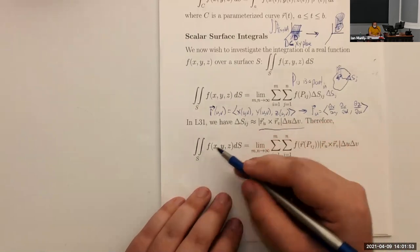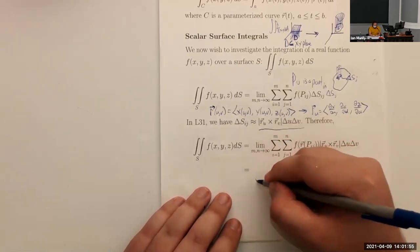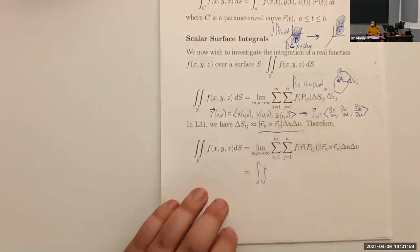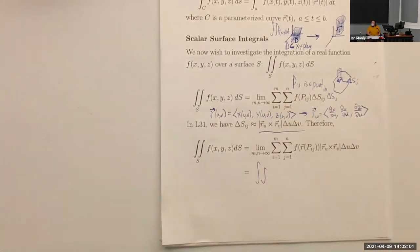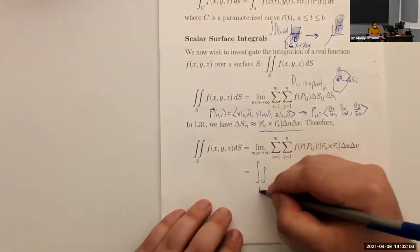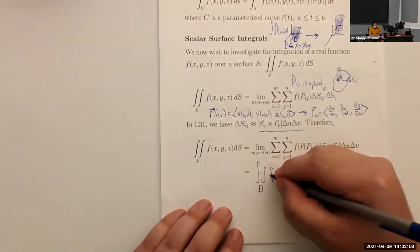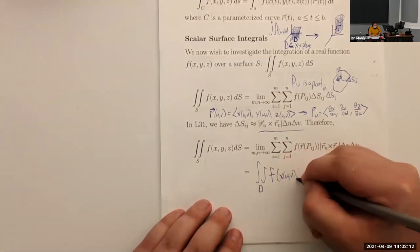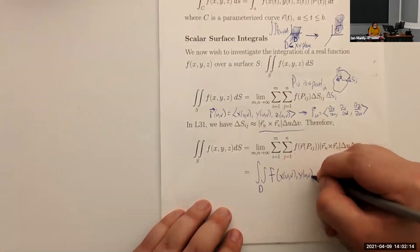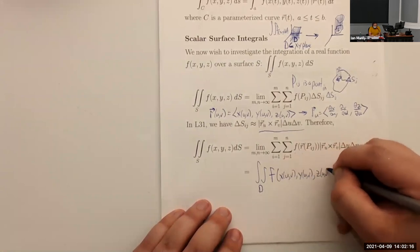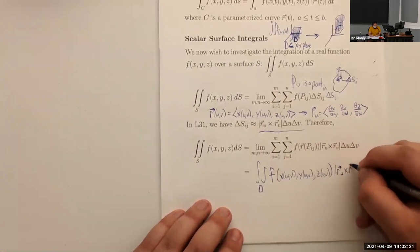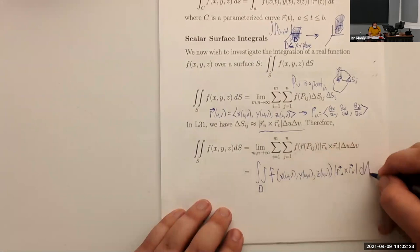This is the scalar surface integral — analogous to scalar line integrals. Rewriting it, our surface integral equals the integral over D of f(x(u,v), y(u,v), z(u,v)) times |R_u cross R_v| dA, where D is the space of u and v values.